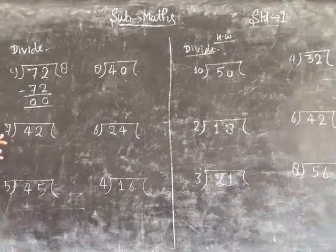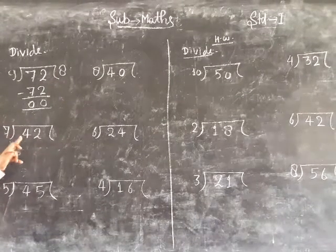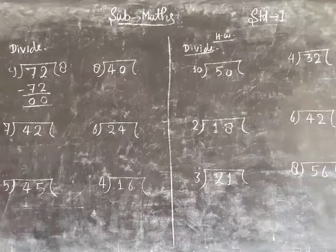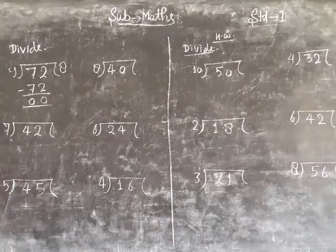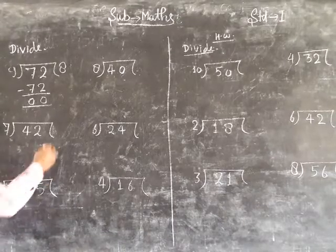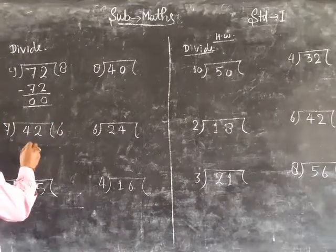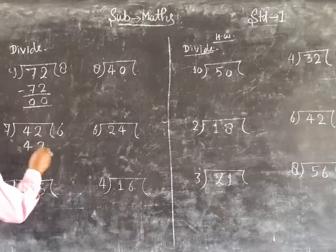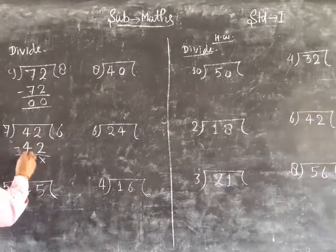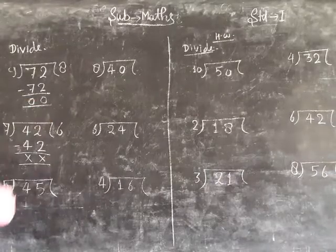9 plus 42 divided by 7. 7 plus 42. 7 plus 7, 7 plus 14, 7 plus 21, 7 plus 28, 7 plus 35, 7 plus 6 is 42. 6. 7 plus 6 is 42 minus 2 minus 2, 4 minus 4, 0.